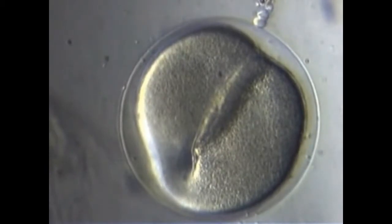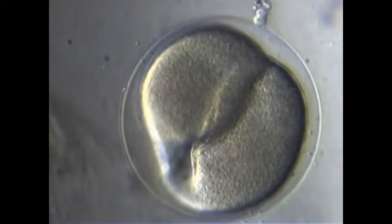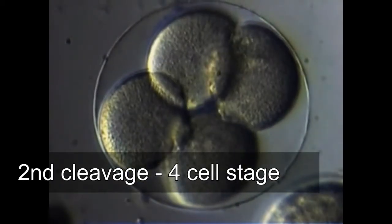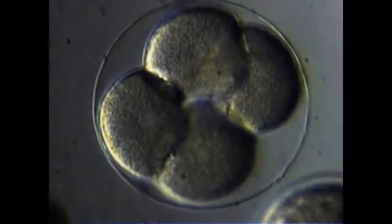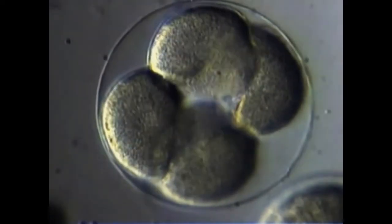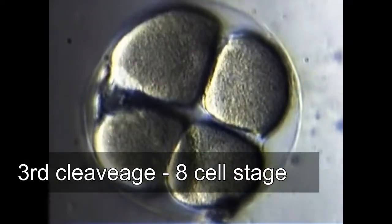The first cleavage plane passes through the animal-vegetal axis and splits the zygote into two blastomeres. The second cleavage plane also passes through the animal-vegetal axis but is oriented perpendicular to the first. The third cleavage plane produces eight cells and is equatorial.